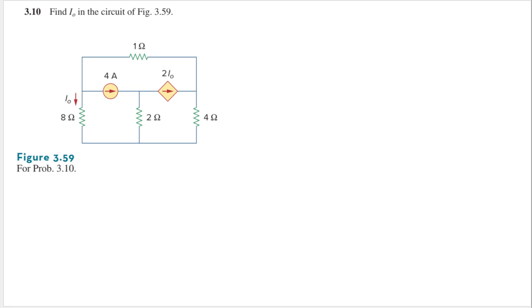Hello, my name is RD and we are going to solve problem 3.10 from the Sadiku book. The question is to find I0, which is the current that passes through the 8 ohm resistor.